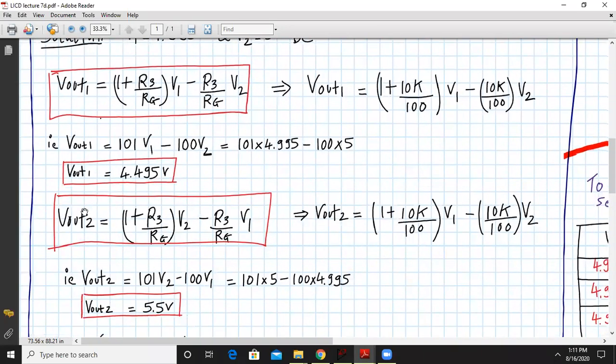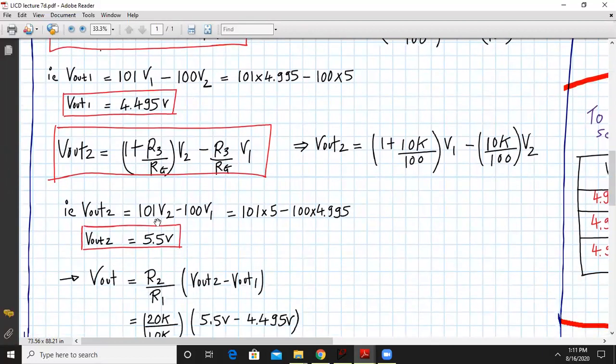Similarly Vout2 you can calculate. V1 and V2 are interchanged as you can see from the earlier formula. So Vout2 will be (1 + R3/Rg) × V2 - (R3/Rg) × V1. So with R3 and Rg as 10k and 100, that becomes 101V2 - 100V1. Substitute the values and you will get Vout2 as 5.5 volts.